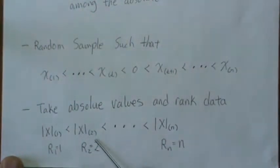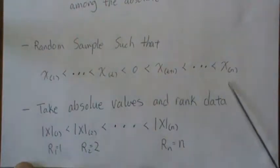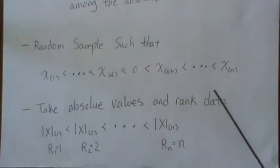Then we rank them, one, two, all the way to n. Then we add the ranks where the original data is associated with the positives, and that's the Wilcoxon signed rank test.